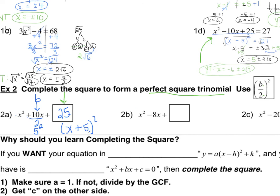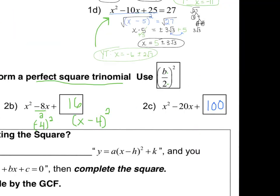For 2b, we'll take the negative 8, divide it by 2, and we get negative 4. When you square negative 4, you get positive 16. So that's what goes in the square. If we were to factor that, we would get the quantity x minus 4 squared. And the last one, try on your own. For 2c, you should get 100 in the box, and when you factor it, you'd get x minus 10 squared.